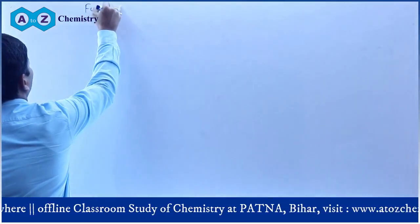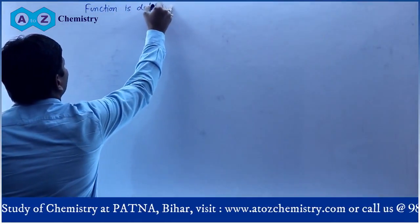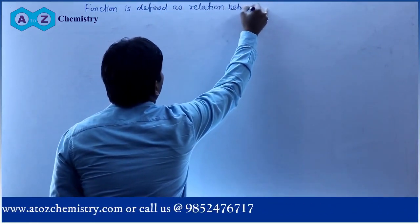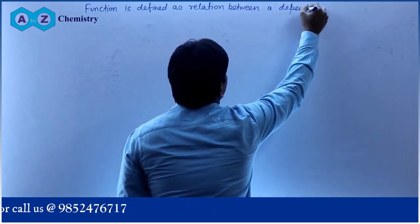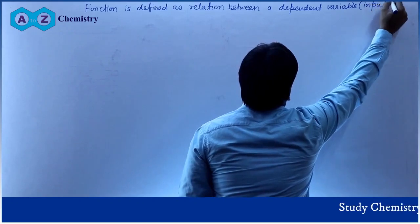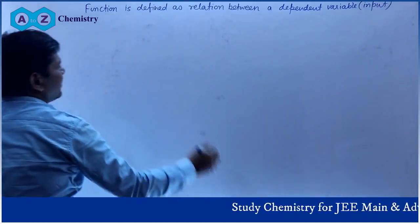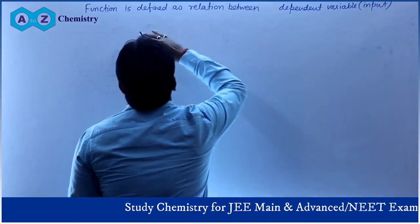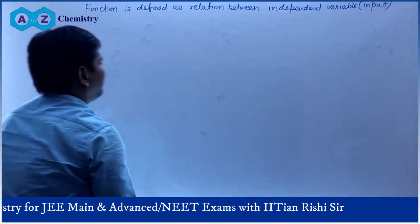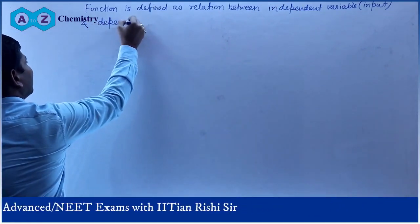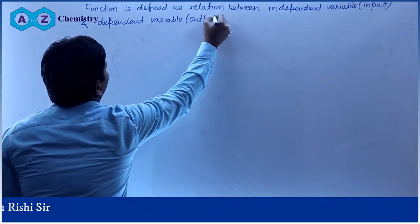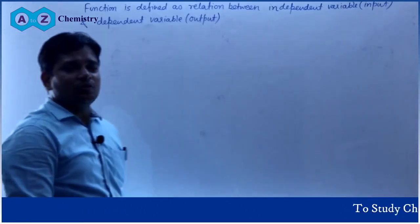We take the definition of function. Function is defined as a relation between independent variable and dependent variable. An independent variable is nothing but input — normally we represent it as x. A dependent variable is the result of the function, the output. Function is defined as relation between independent variable and dependent variable, such that for each independent variable we have a unique output.